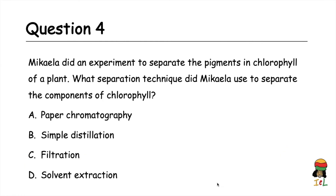Question four: Michaela did an experiment to separate the pigments in chlorophyll of a plant. What separation technique did Michaela use to separate the components of chlorophyll? A: paper chromatography. B: simple distillation. C: filtration. D: solvent extraction. The answer is paper chromatography.